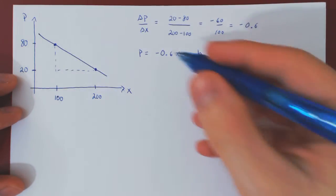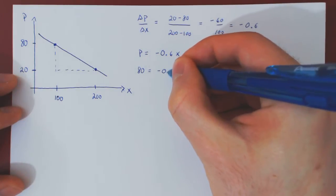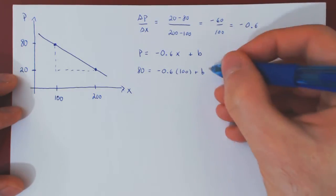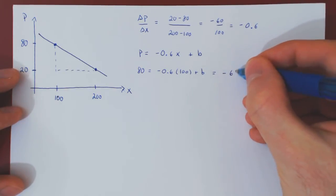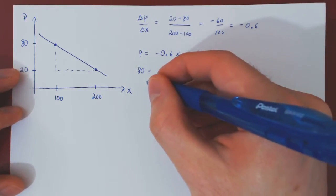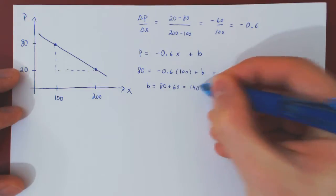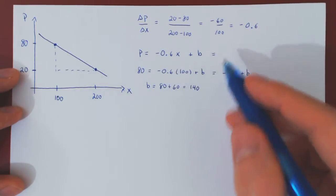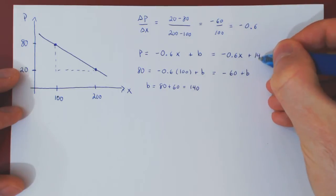Replacing: the price is 80, so we get 80 equals negative 0.6 times 100 plus b, which is negative 60 plus b. To isolate b, add 60 on both sides: b equals 80 plus 60, which is 140. So the demand function p as a function of x is equal to negative 0.6x plus 140.